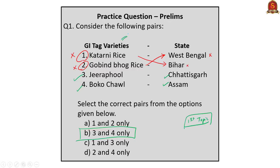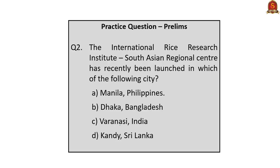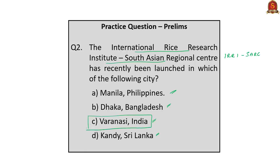Question 2 asks in which city the International Rice Research Institute South Asian Regional Centre was recently launched. Option A: Manila, Philippines. Option B: Dhaka, Bangladesh. Option C: Varanasi, India. Option D: Kandy, Sri Lanka. This is a direct question — the correct answer is option C, Varanasi, India, as discussed in the first news article analysis.